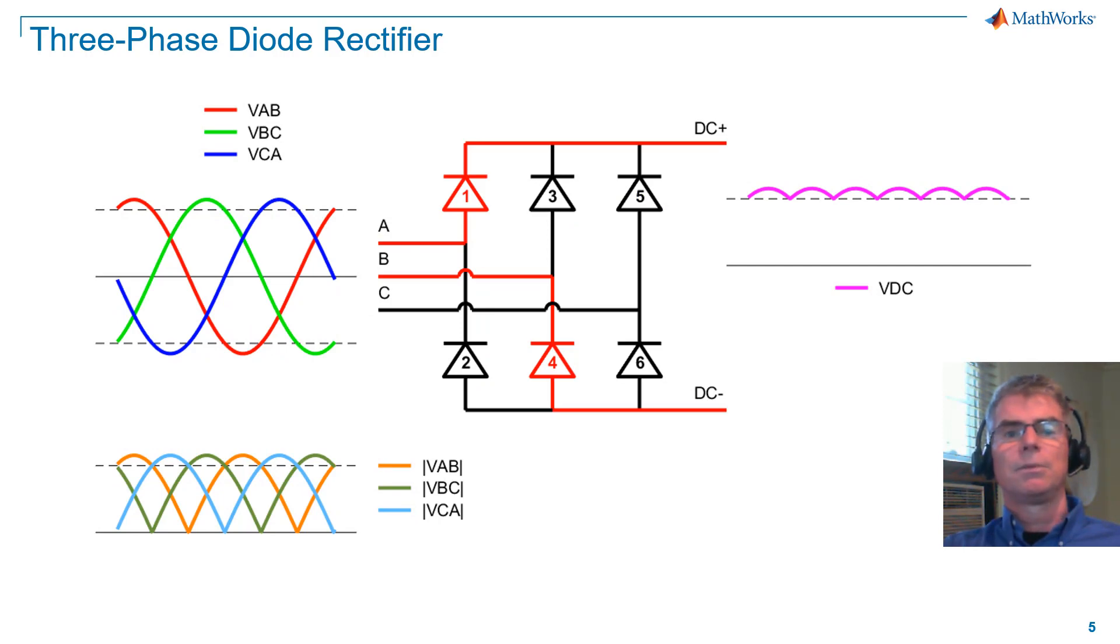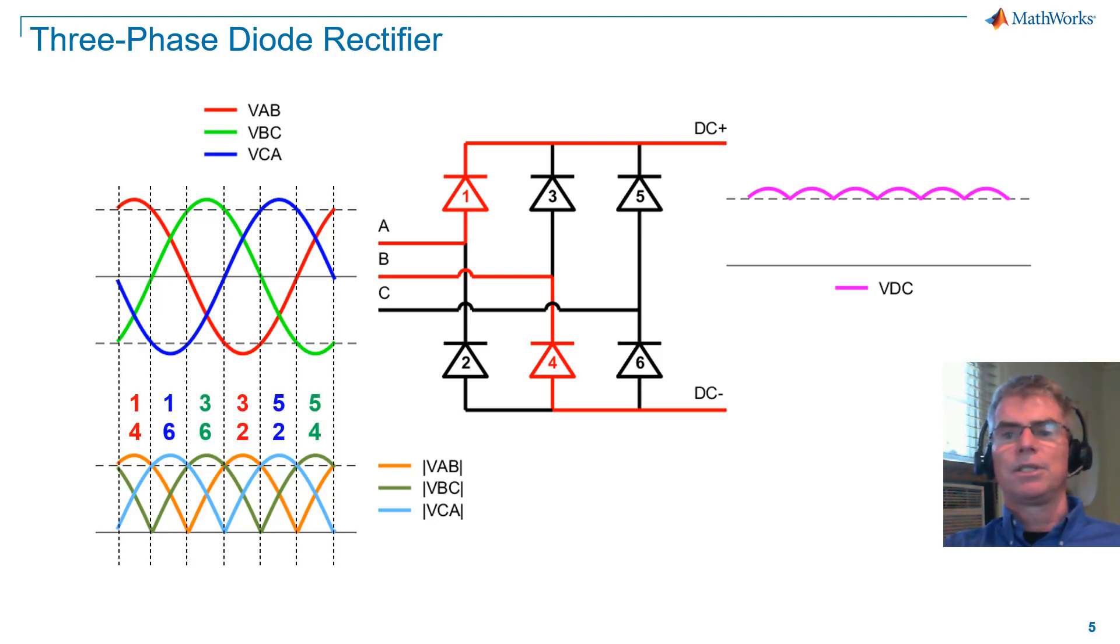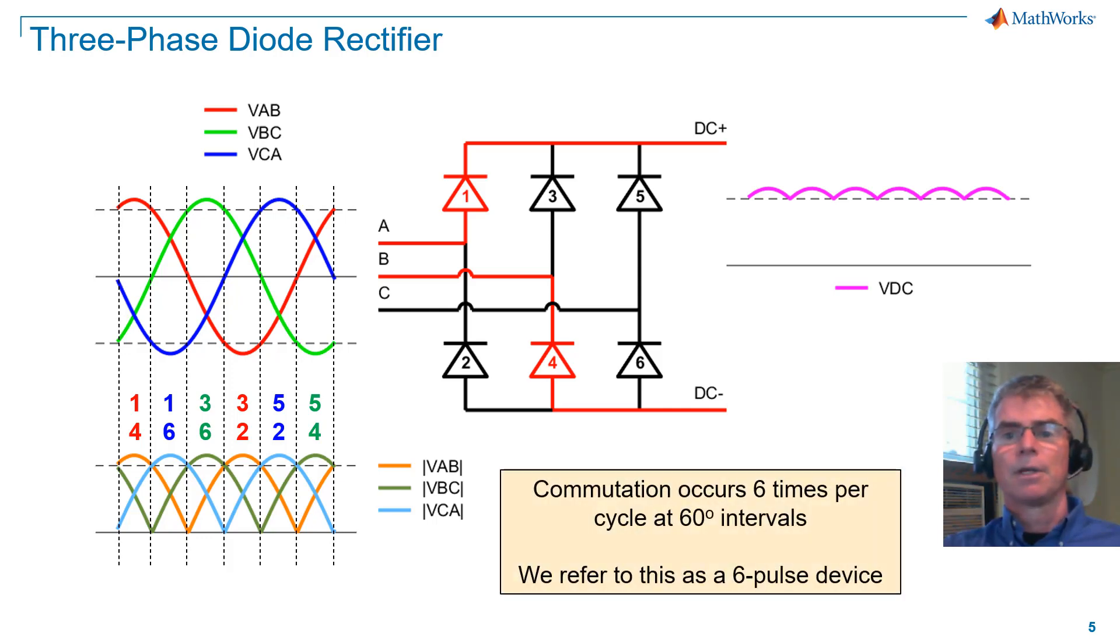If we look at the commutation sequence, you can see that there are six commutations in a single cycle, and so commutation is occurring every 60 degrees. As there are six commutations per cycle, we refer to this as a six-pulse device.